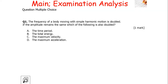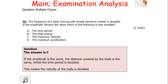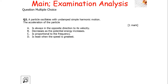Multiple choice: the frequency of a body moving with simple harmonic motion is doubled. If the amplitude remains the same, which quantity is also doubled? The answer is C. Since the amplitude is the same, the distance covered by the body is the same, but the time period is halved. This means the velocity of the body is doubled.